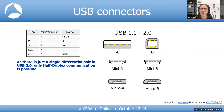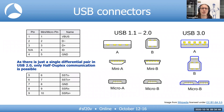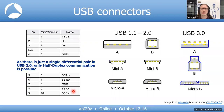USB 3 adds two separate super-speed differential pairs — the SS transmit and super-speed receive. When a device operates in backwards compatibility mode, it uses a dedicated USB 2 differential pair. The super-speed traffic happens solely on the super-speed TX and super-speed RX. USB 3 is dual simplex, as it has one differential pair lane in each direction.